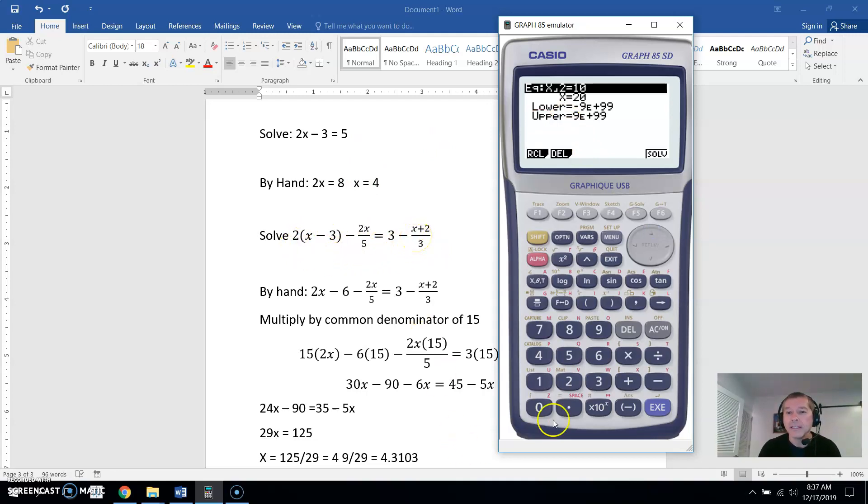There's no other variable in it. So 2, parentheses, X minus 3, close parentheses, minus 2X. Now, you can put that in parentheses if you want to, but it knows that the 2X are both on the top. And then over, I think we can use the fraction key here. Now, if the fraction key doesn't work, whoop, there it is, it did. Let's delete that. 2X over, was it 5?